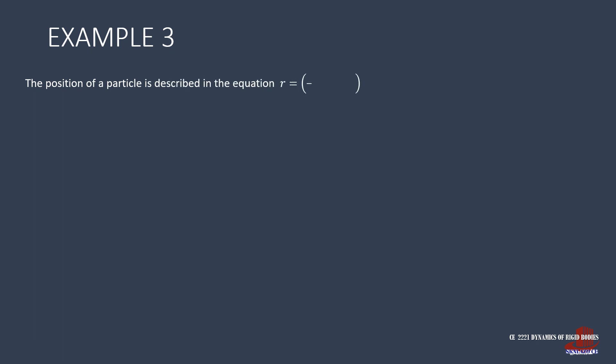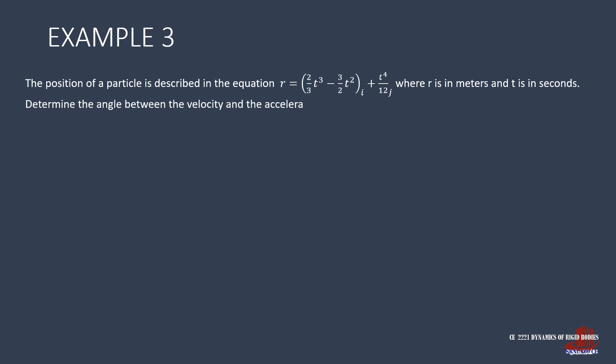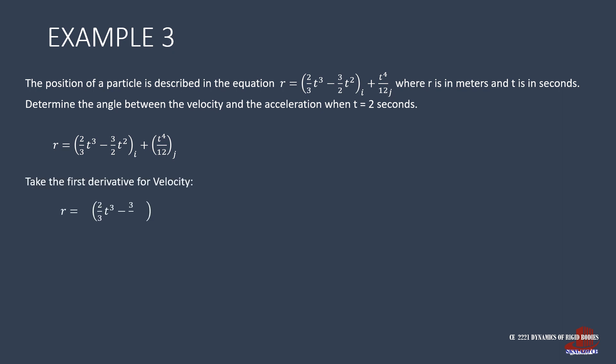Example 3 presents the equation of displacement as r equal to (2/3)t³ minus (3/2)t² for i, plus t⁴ over 12 for j. It states that we should find the angle between the velocity and acceleration when t is 2 seconds. Since we are given the displacement equation, we take the first derivative of r to get velocity: dr/dt equals v. Then take the derivative of the i component and the j component.